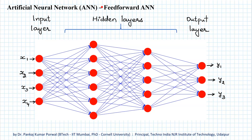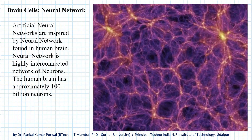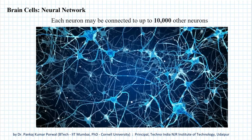In this session, I am going to discuss artificial neural network. Artificial neural network is inspired by the neural network found in the human brain, where close to 100 billion neurons are interconnected in a complex network, and each of the neurons may be connected to up to 10,000 other neurons.